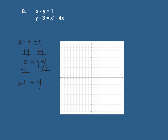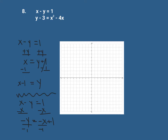Another way you could do that: starting with the original equation, subtract x from both sides, leaving negative y equals negative x plus 1, then divide by negative 1, giving y equals positive x minus 1. Either way you wind up with y equals x minus 1.